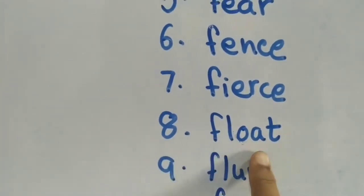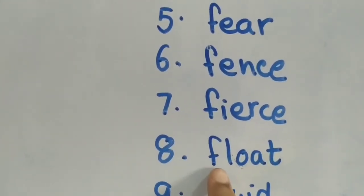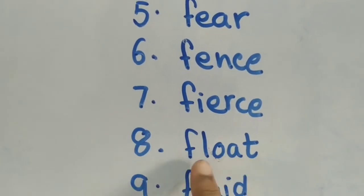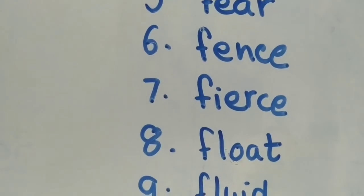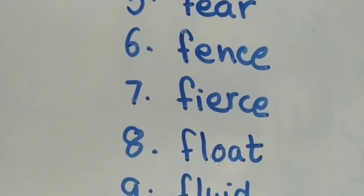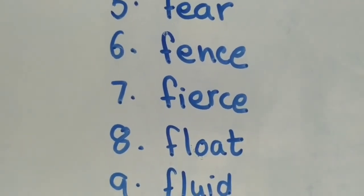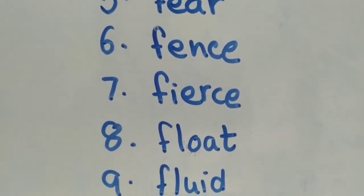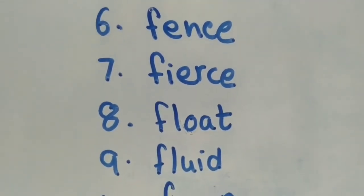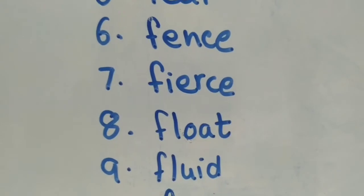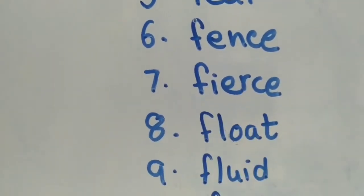Number eight is float. F-L-O-A-T. Float. Float means the opposite word is sink. If you put a ball, a plastic ball, a light ball in a bucket of water, what will happen? You will see the ball is floating. So the spelling is F-L-O-A-T. Float.